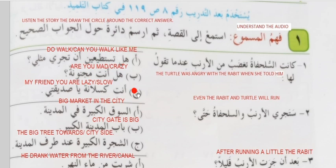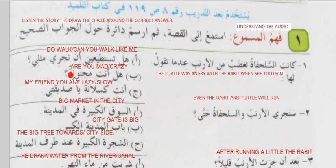So there are three options — circle the most correct one. Hal tastakeen wa tajri misli? Do you walk, or can you walk like me? Misli means like me. Tajri — jari means walk or run. Hal anta majnunatun — are you mad or crazy? Majnun means mad or crazy. Hal, when we start a question, we use hal.